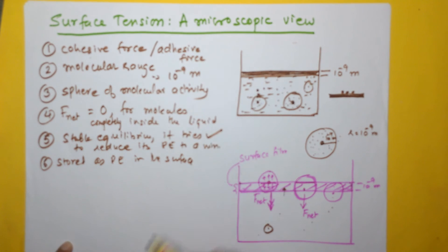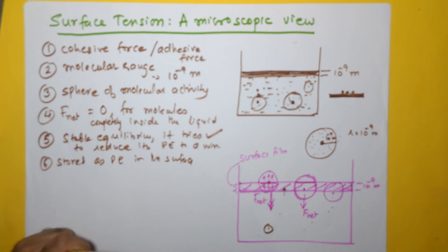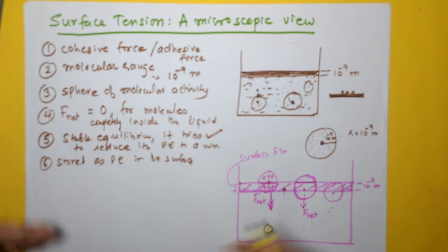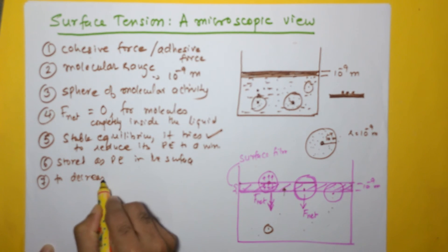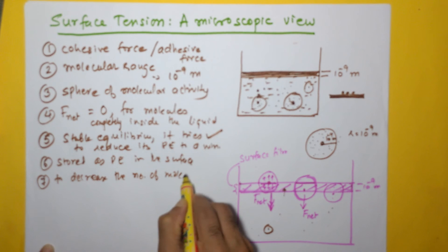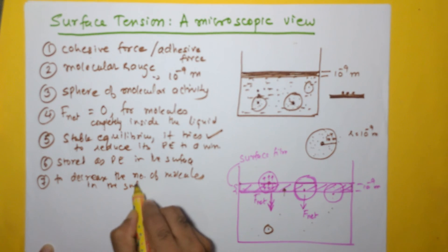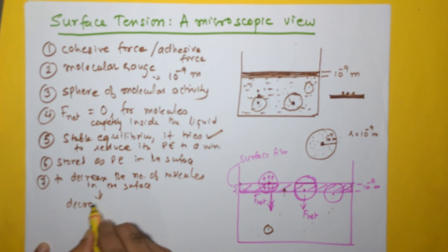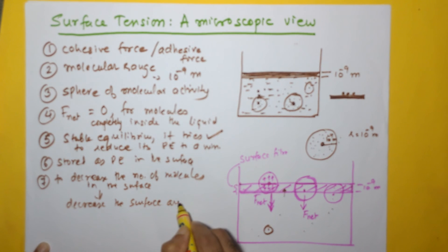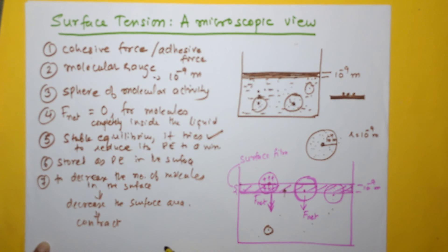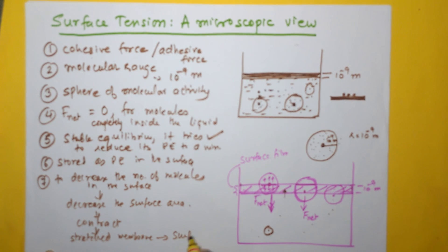Since the surface film has higher potential energy, it tries to reduce its potential energy to a minimum. To do that, it needs to decrease the number of molecules in the surface, which means decreasing the surface area. To decrease the surface area, it contracts. This surface will try to contract, stretching itself so that the surface area becomes minimum and potential energy is reduced. Therefore, the surface looks like a stretched membrane, and that is seen as surface tension.